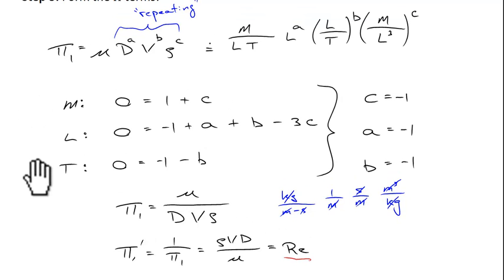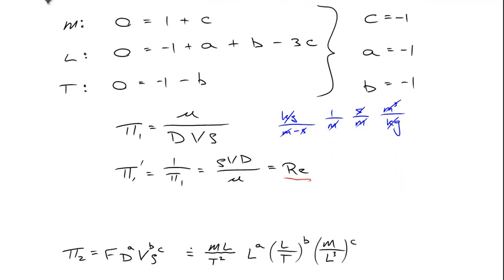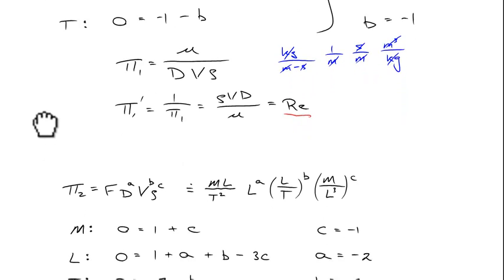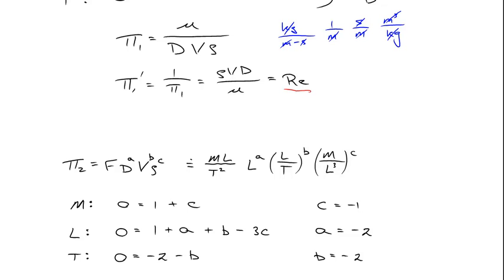To find the second pi term I do something similar, except instead of using viscosity I now use the force, along with the same three repeating variables d, v, and ρ raised to exponents. The dimensions of force are mass·length per time squared; diameter is length; velocity is length per time; and so on for density. Writing out the three algebraic equations according to the dimensions, I find c = -1, a = -2, and b = -2.